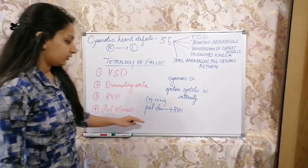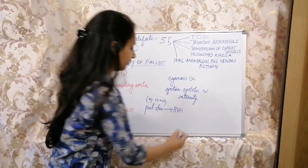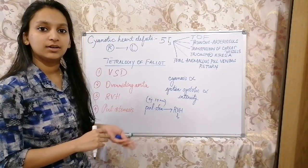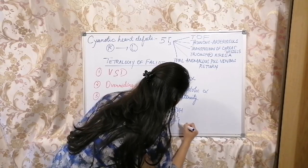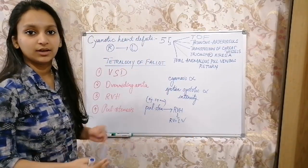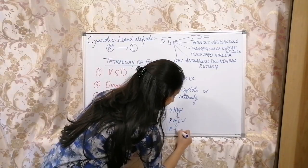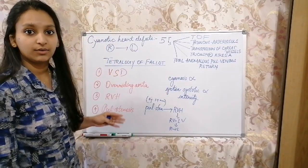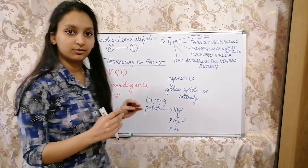Because of this, they produce a particular ejection systolic murmur. This results in right ventricular hypertrophy, and the pressure between right ventricle and left ventricle will be equal because they are equally enlarged. When pressure is equal, blood will flow from right to left even though VSD is there. We always learned VSD is left to right, but even though VSD is there...